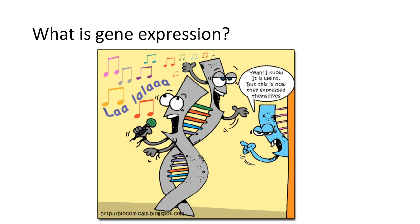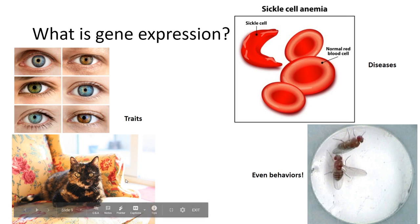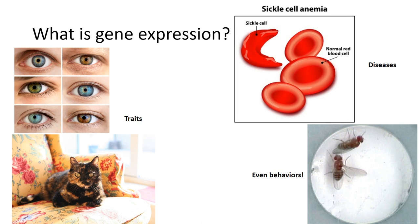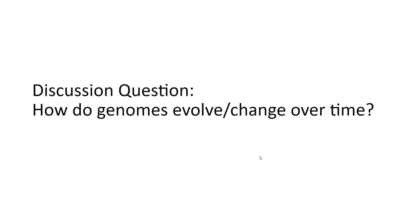Gene expression is what happens when a gene is transcribed and translated into functional proteins. We can see gene expression in eye color, hair color, how tall you get, behavioral preferences, and genetic disorders. For example, calico cats occur in females only because females have two copies of the X chromosome, so coloration from two different gene varieties can be expressed simultaneously, giving a mixture of colors.